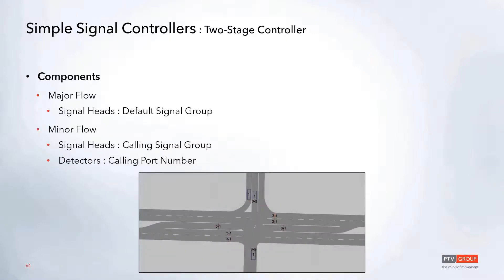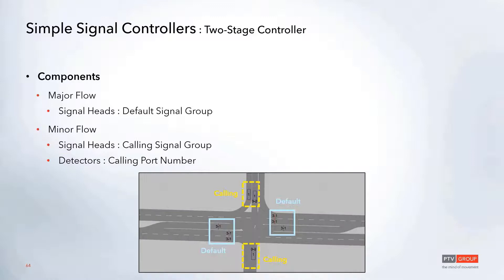For setup of the two-stage controller, the major flow signal heads are assigned to the default signal group, the minor flow signal heads are assigned to the calling signal group number, and the calling port number detectors are set up for the minor flow.